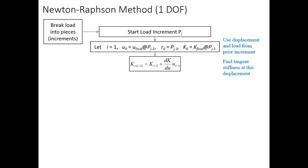Now, we can find also the tangent stiffness at this initial displacement. So, we're evaluating the stiffness curve effectively. So, the tangent stiffness for iteration 0, KT0, is equal to the secant stiffness at 0, plus the derivative of the secant stiffness with respect to displacement, times the displacement at iteration 0.